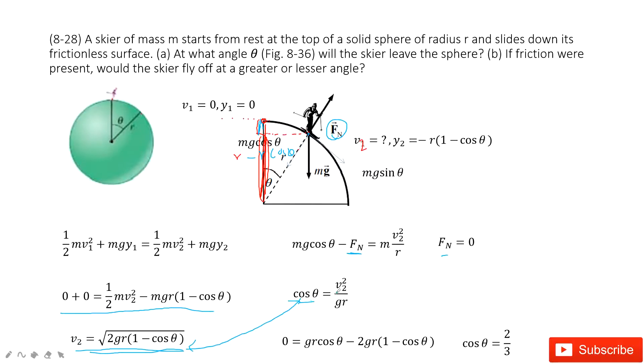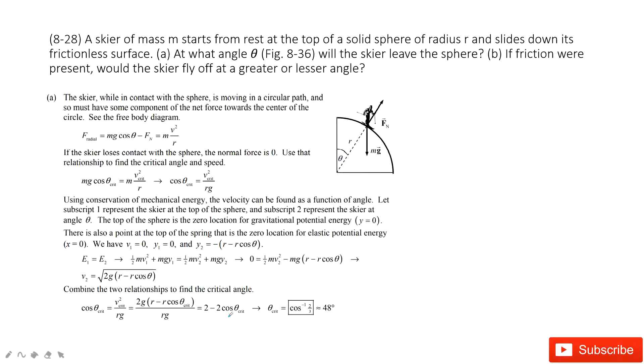When we input the equation v2, v2 square equals gr cosine theta. And then we input it. And then we solve these two equations. We can get the cosine theta is 2 divided by 3. Now you find the cosine theta is 2 divided by 3. So the angle is 48 degrees.